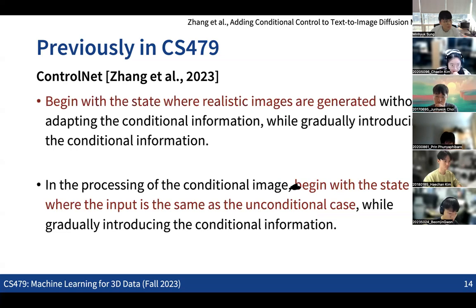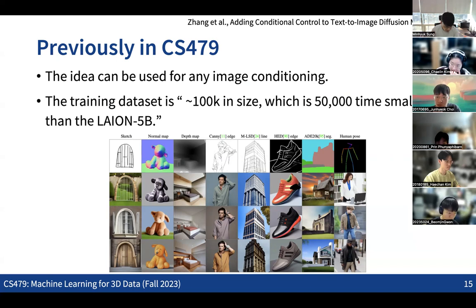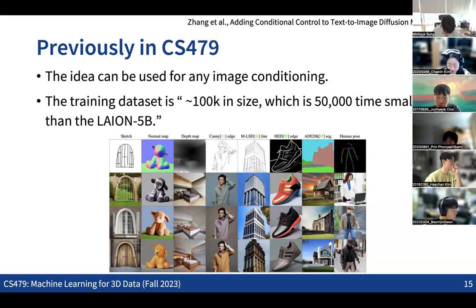This idea can also be used in many kinds of conditional cases when the condition data and outputs are basically the same type — like images or 3D — applying the same zero convolution idea, processing both the conditional data and the noisy data in the reverse process using the same neural net architecture. Those are all the different applications: taking sketch, normal map, depth map, edge map — whatever kind of condition — and generating realistic images.